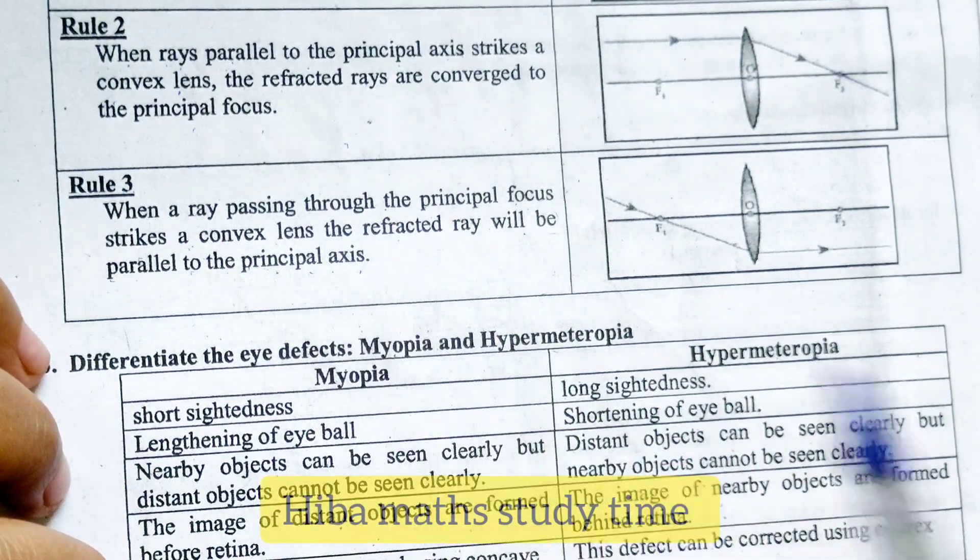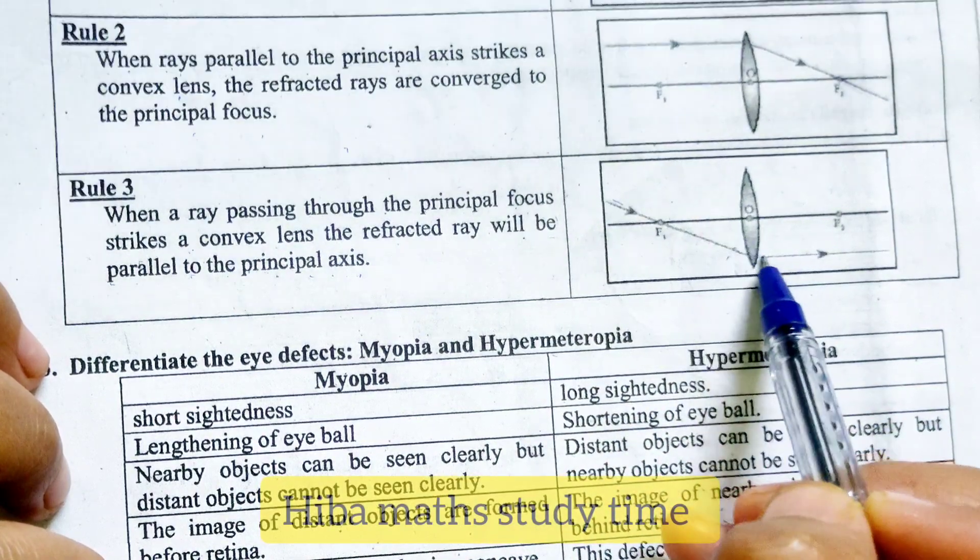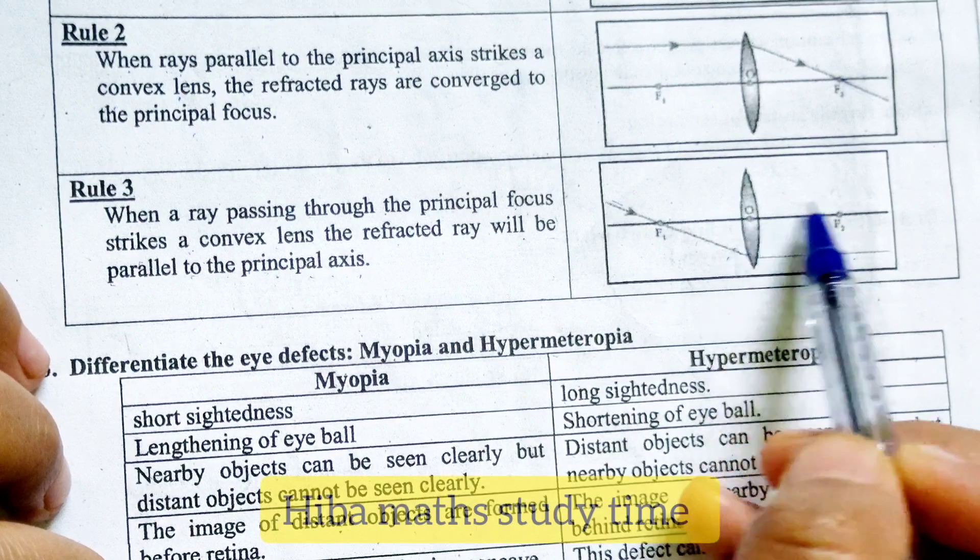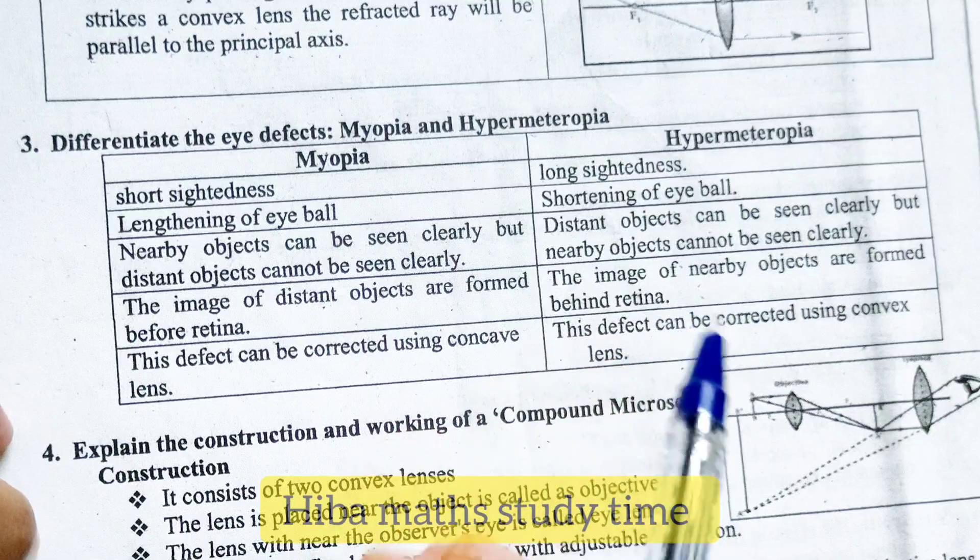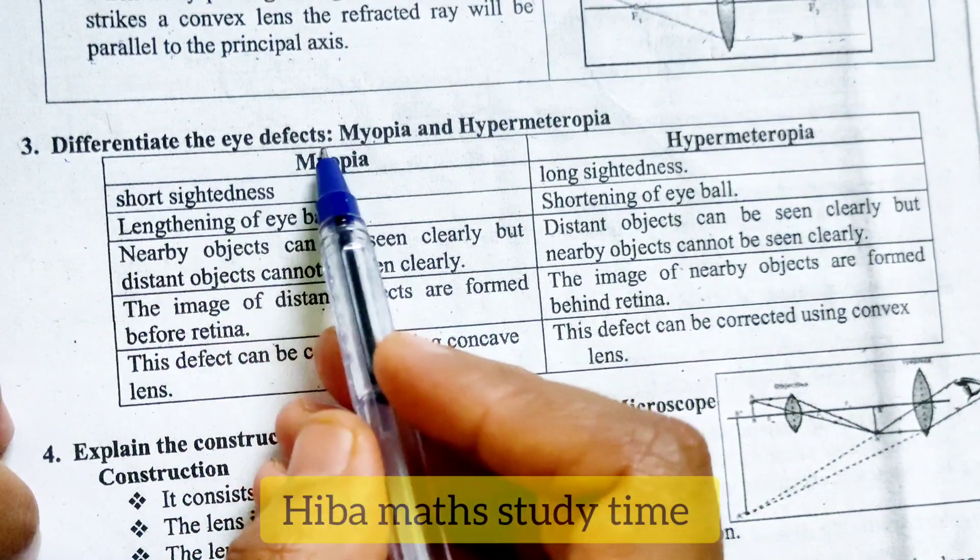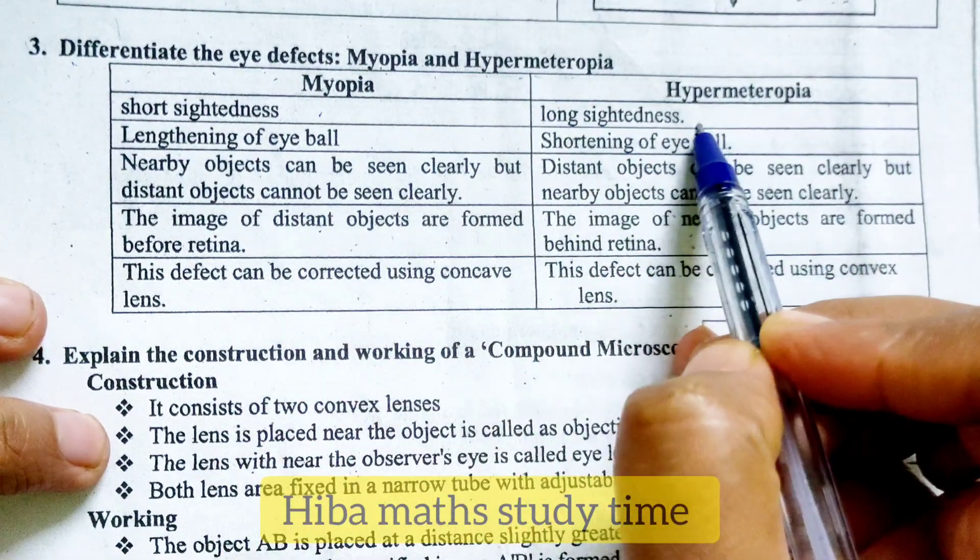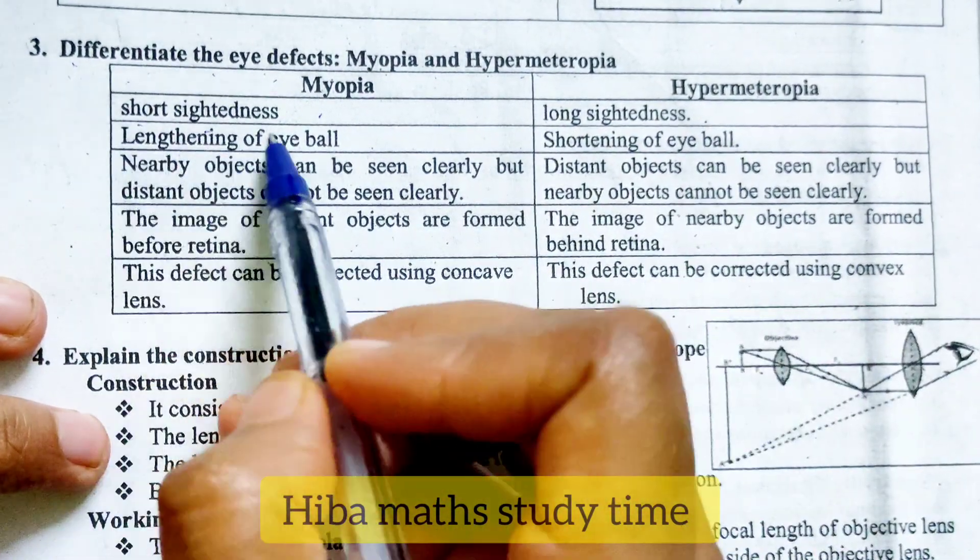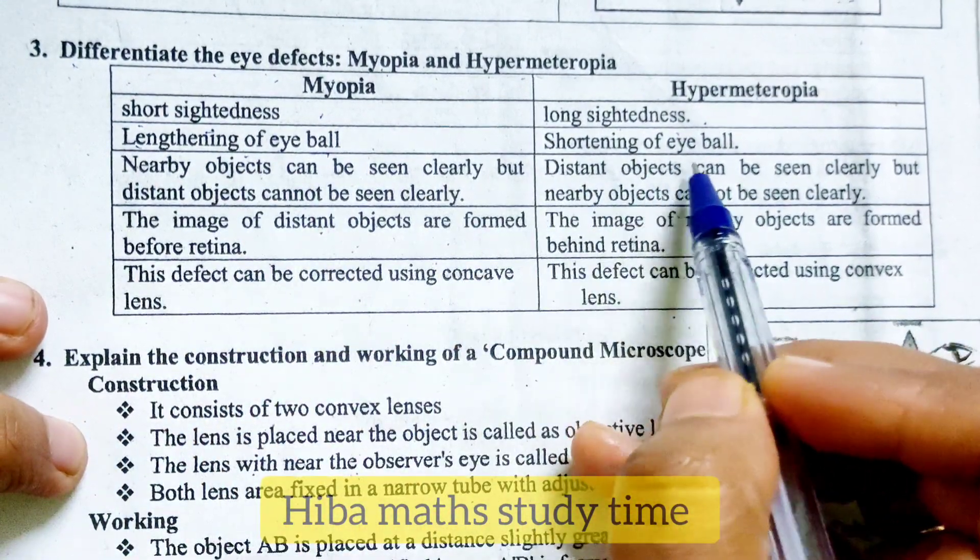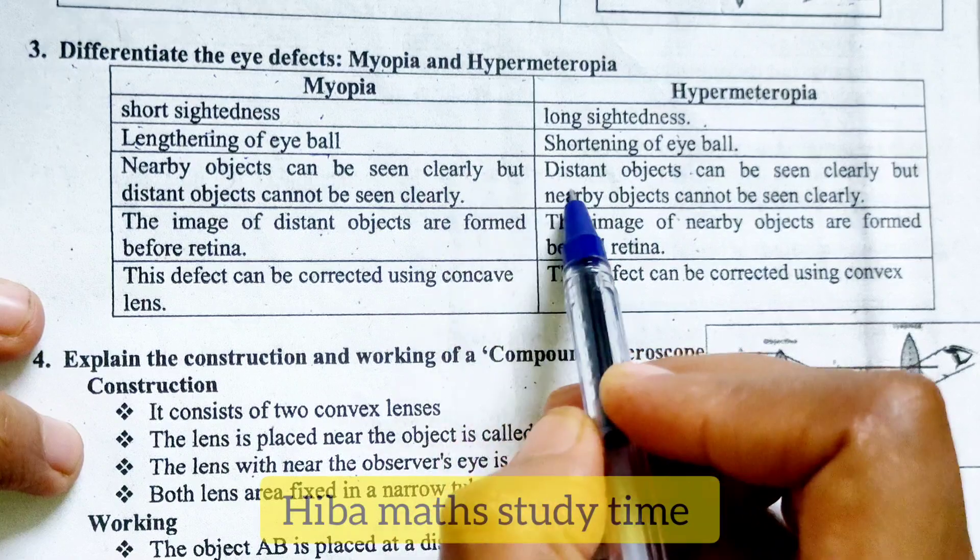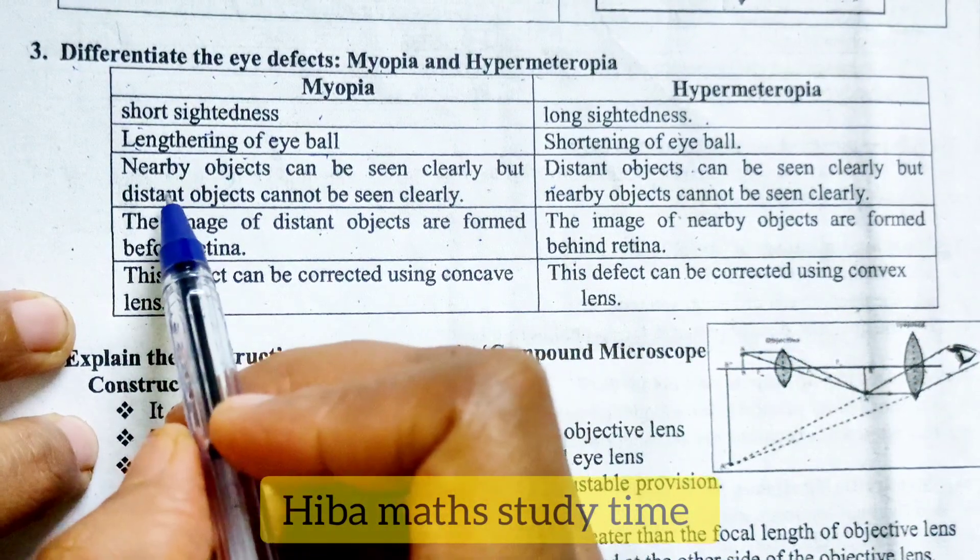the principal axis is crossed, and the convex lens will be parallel to the principal axis. Third point, differentiate eye defects. We will choose Myopia and Hypermetropia.